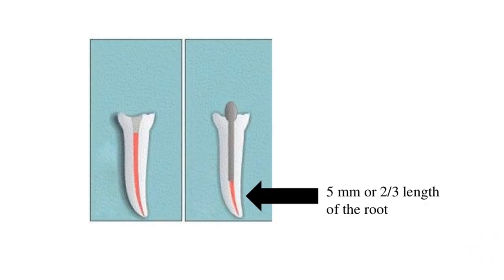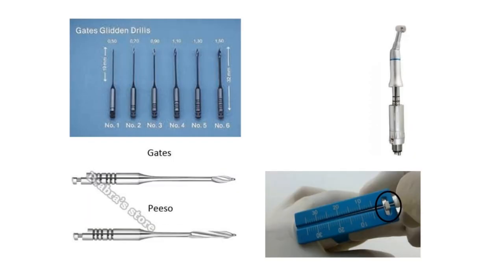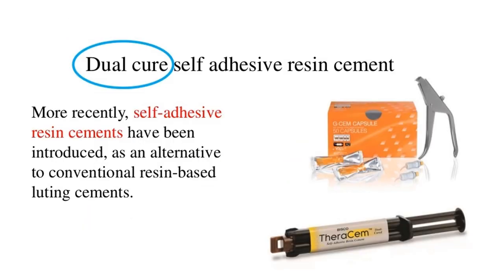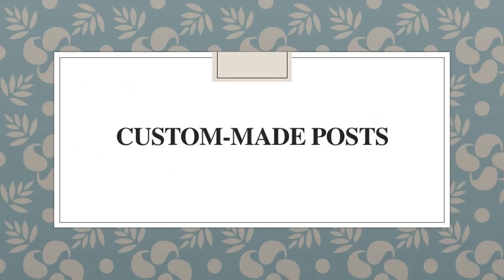Post length should be 5 millimeters or two-thirds the length of the root. Dual-cure self-adhesive resin cements have been introduced more recently as an alternative to conventional resin-based luting cements.